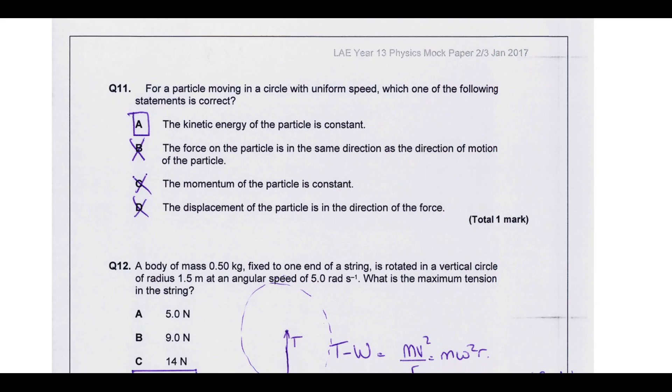We've got a particle moving in a circle with uniform speed. Which one of the statements is correct? Kinetic energy of the particle is constant. Yes, kinetic energy depends on speed. So speed is the same, kinetic energy is the same because they're both scalars. That one's going to be the correct one, but let's just double check. The force on the particle is in the same direction as the motion - no, if you think about in circular motion, the force is towards the centre, whereas the motion is tangential. So they're actually perpendicular. The momentum of the particle is constant - no, velocity is constantly changing because direction is changing. Therefore momentum is changing because they're all vectors. Displacement of the particle is in the direction of the force - no, that's not going to be correct. The displacement is actually in completely opposite direction. This is actually a form of SHM. Because the displacement is positive, whereas the force here is clearly negative.